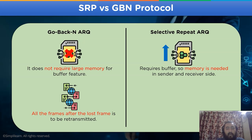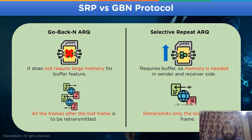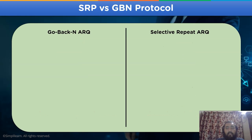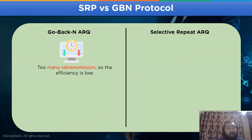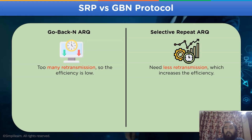In Go-Back-N ARQ protocol, all frames after the lost frame are to be retransmitted, as discussed earlier. Whereas in Selective Repeat ARQ protocol, only the damaged or lost frame is retransmitted. Because Go-Back-N requires too many retransmission frames, the efficiency of the overall model is very low. In SRP protocol, fewer retransmission frames are needed, so the efficiency of the overall model is increased.